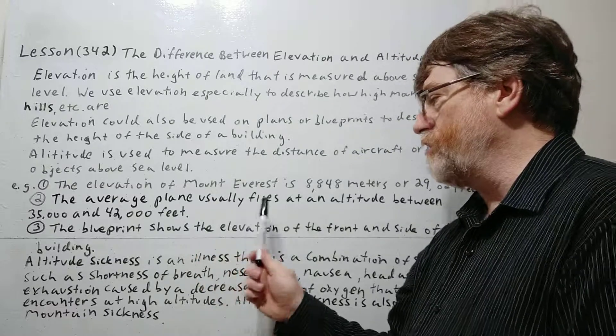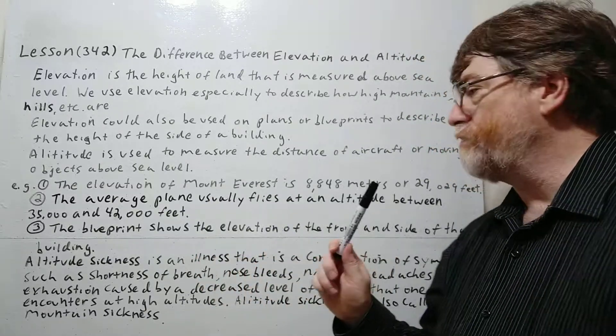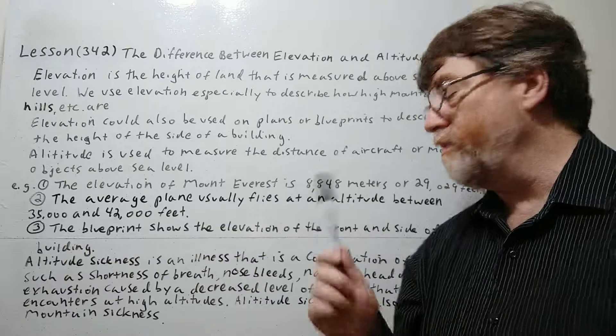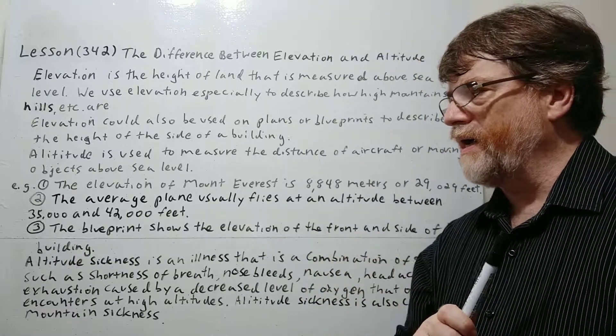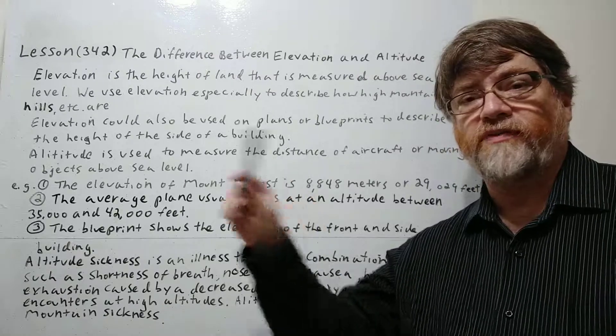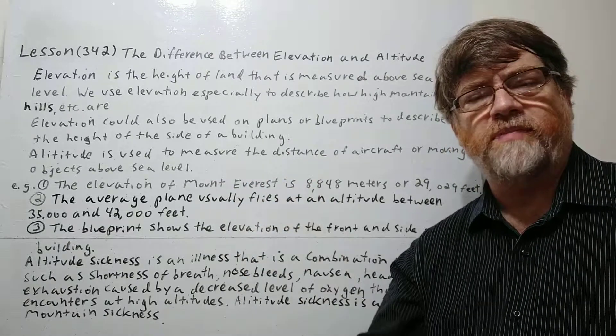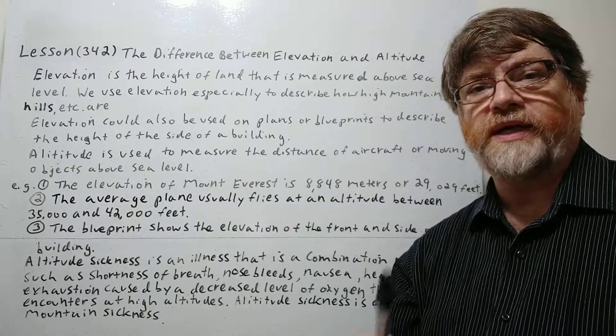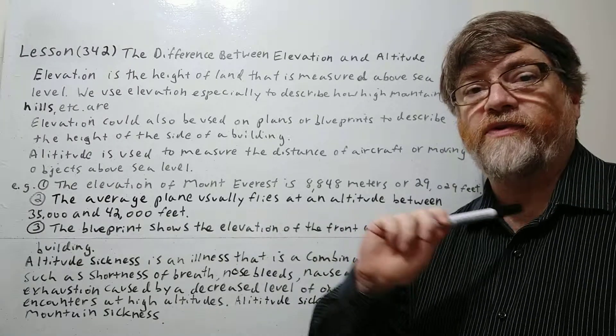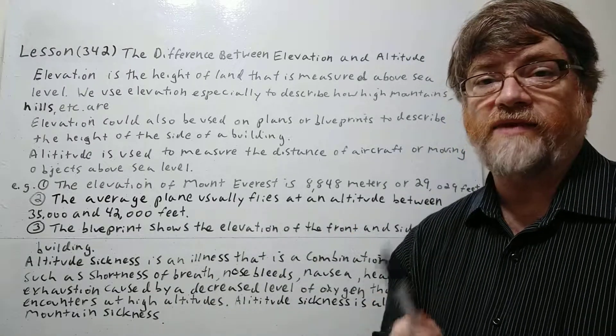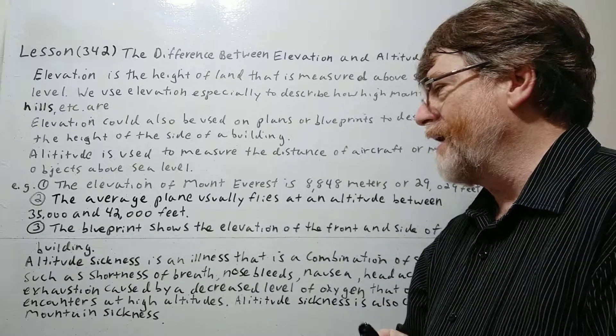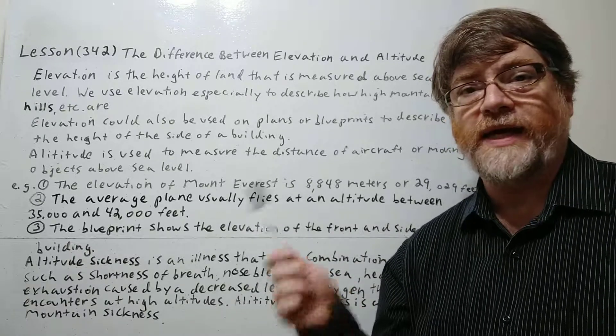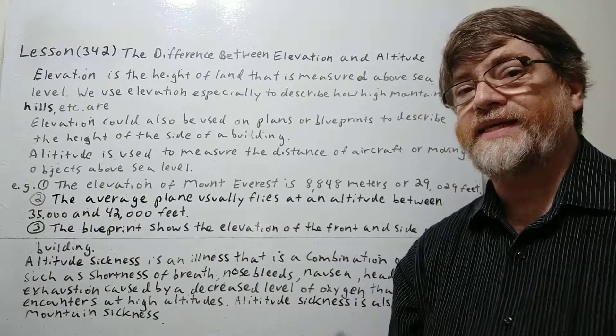The average plane usually flies at an altitude between 35,000 and 42,000 feet. So this one we definitely use altitude for. We will not use elevation for this. I did look at it. I think they said that this is the perfect area because you need to go above 35,000 feet. The air becomes thinner and if the air becomes thinner, the plane actually has less resistance. It can travel faster and airlines save on gas or gas mileage. And I think there's a problem going above 42,000 feet to some problem with the engines or something. So they usually stay in this area.